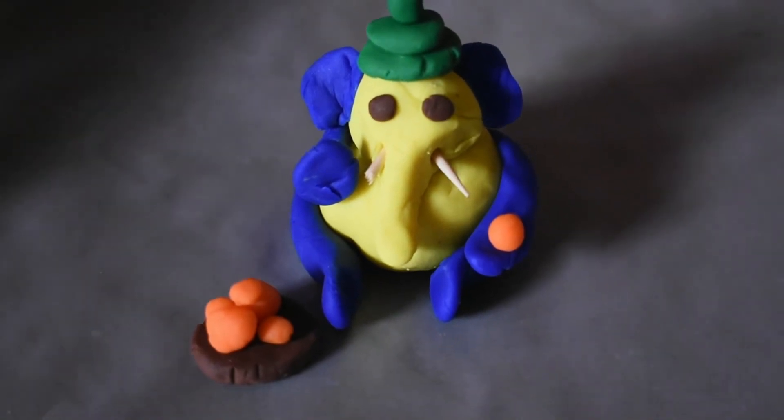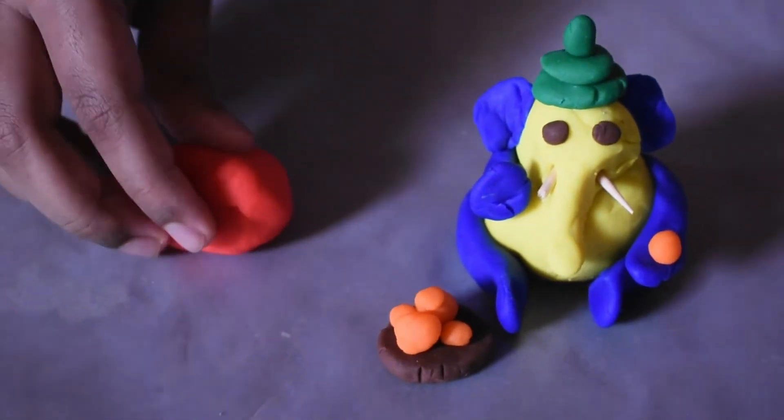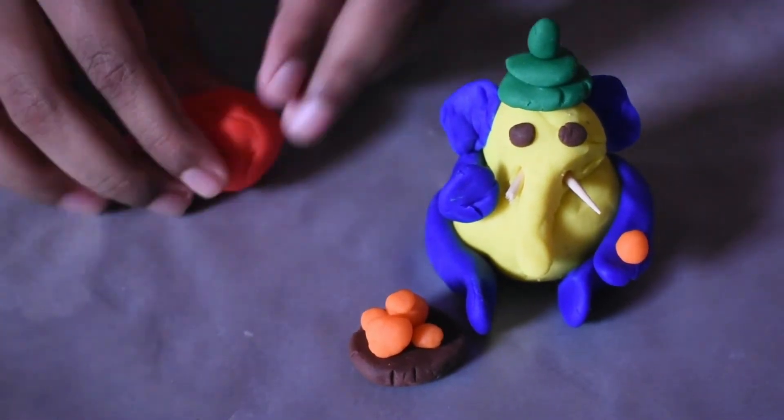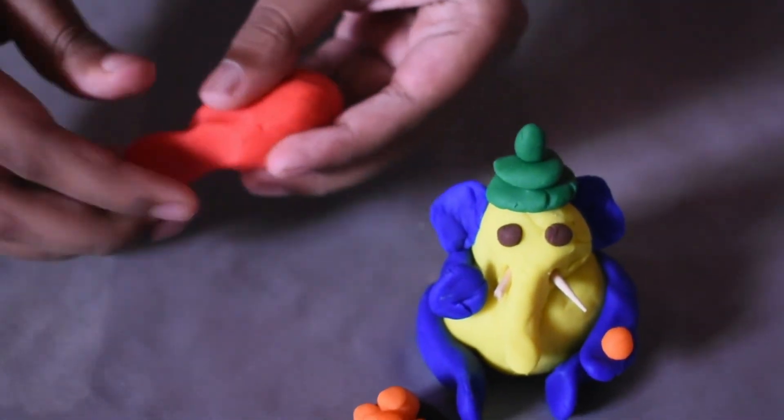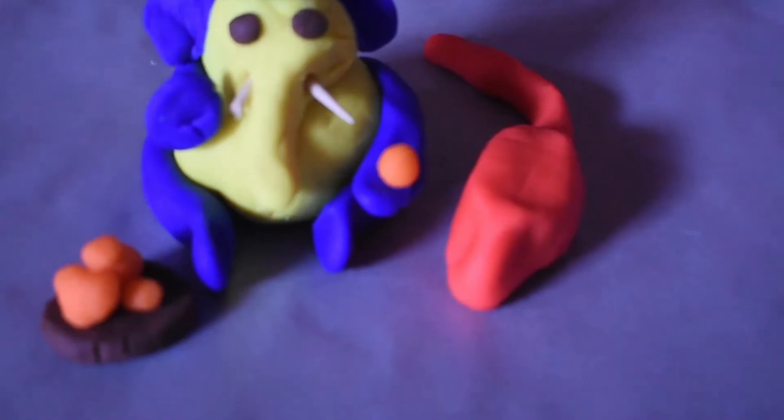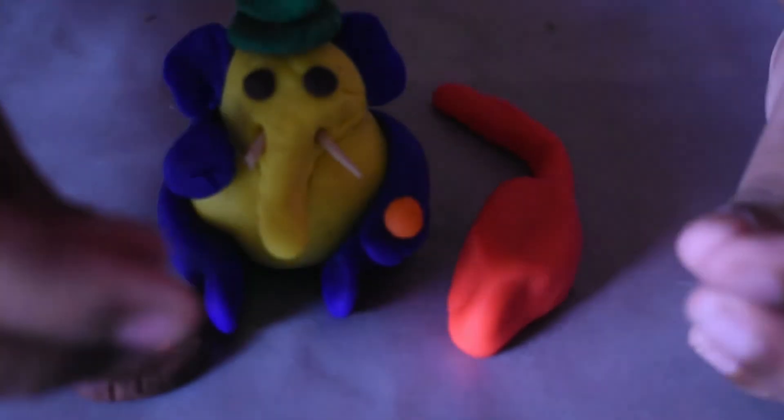Next I am going to make the mouse. I am using red clay. I have shaped the mouse. Now I am going to put eyes on the mouse.